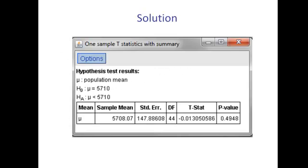Now, we can run this test in statistical software such as StatCrunch and we get our t statistic of -0.013 and our p-value of 0.4948.